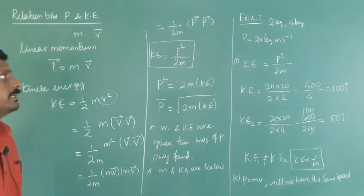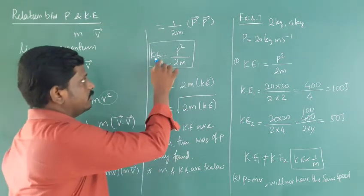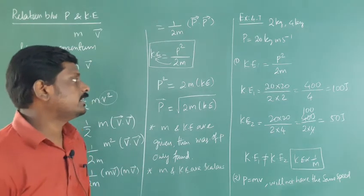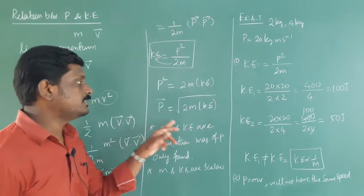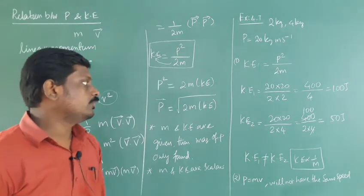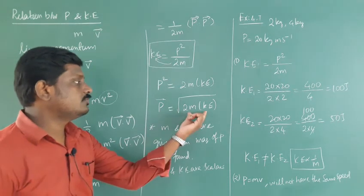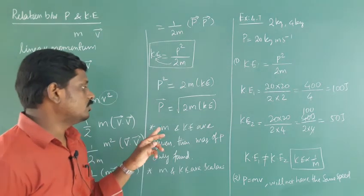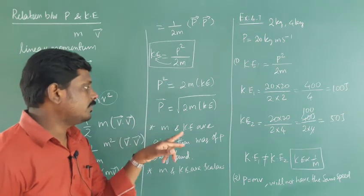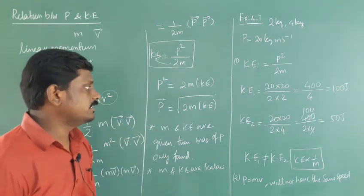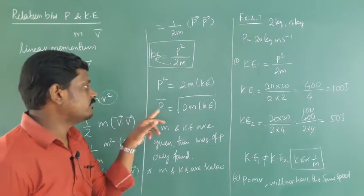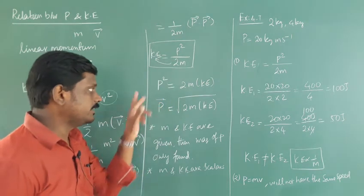Just rewrite: P square equal to 2m into kinetic energy. So momentum P is equal to square root of 2m into kinetic energy. You will use this in Plus 2. If in a problem, mass and kinetic energy are given, then we can find the momentum, that is magnitude only.